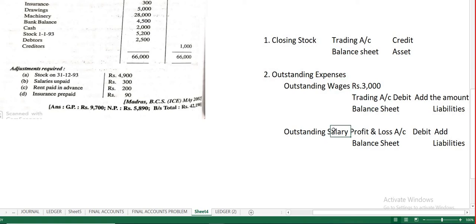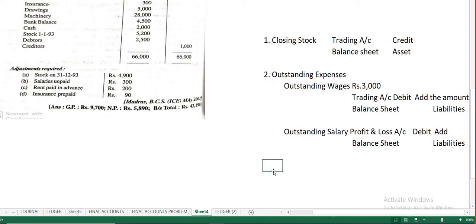That concludes the second adjustment. Outstanding expenses always appear on the balance sheet liability side under current liabilities, because they are short-term obligations — dues that have to be fulfilled. Whether it is salary due, wages unpaid, or outstanding, they are all current liabilities.